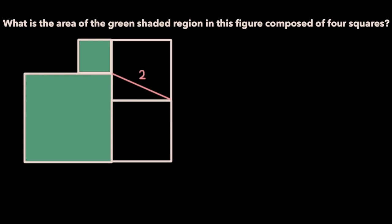Like the problem says, this figure is composed of four squares. The largest square is on the bottom left, the smallest one is on the top left, and then we have two equally sized squares on the right. The goal is to find the area of the green shaded region, that is the area of the smallest square plus the area of the largest square.